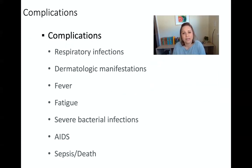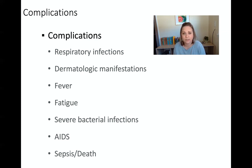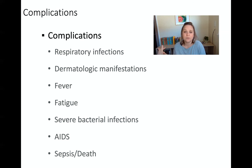Complications of HIV and AIDS are all going to be related to the fact that the patient is immunocompromised — they don't have the immune system to fight off disease. They're going to be at risk for respiratory infections, skin lesions, fevers and fatigue, and really bad bacterial infections. They can progress to full-blown AIDS where their CD4 count is less than 200, and eventually can have severe complications like sepsis, organ failure, and even death. The goal is to prevent the spread of AIDS, reduce the viral load, and keep them infection-free.